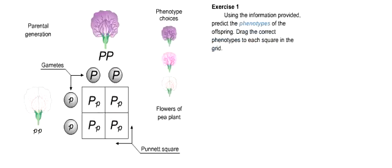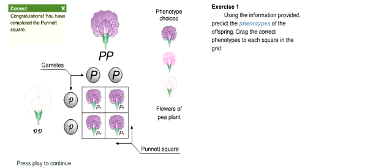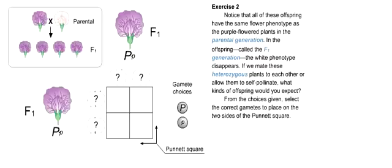Using the information provided, predict the phenotypes of the offspring. Drag the correct phenotypes to each square in the grid. Notice that all of these offspring have the same flower phenotype as the purple flowered plants in the parental generation. In the offspring, called the F1 generation, the white phenotype disappears.